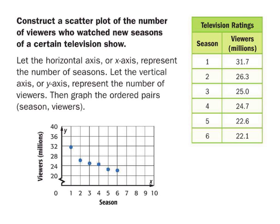Let the horizontal axis, or x-axis, represent the number of seasons, which it shows right here in the graph, and the y-axis is viewers in millions. Then graph the ordered pairs — we've already given you the ordered pairs.